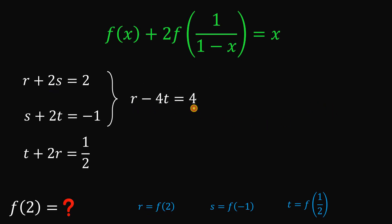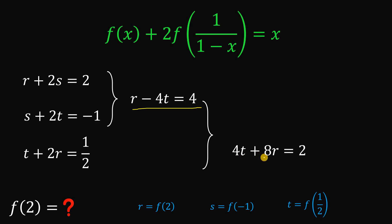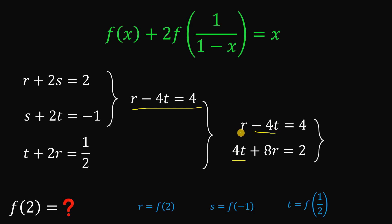Using this result and the third equation, our goal is to eliminate the negative 4t. So let's multiply the third equation by positive 4. If we do that, we have 4t plus 8r equals 2. Copy the resulting equation r minus 4t equals 4 and add the two results — negative 4t and positive 4t eliminate each other. So we have r plus 8r, giving 9r equals 6.